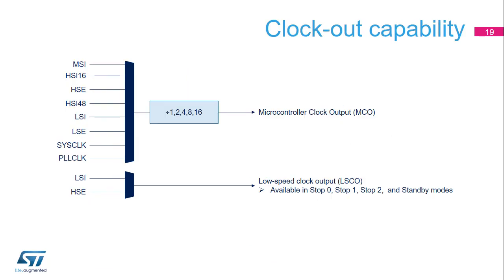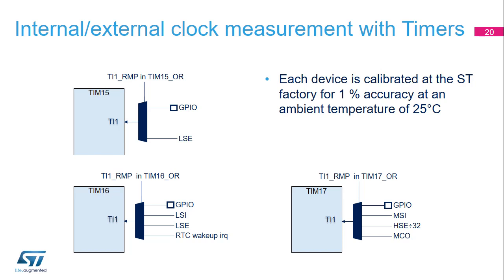The various clocks can be output on an I/O pad. The microcontroller clock output feature enables the external output of one of seven clocks: MSI, HSI16, HSI48, HSE, LSI, LSE, SYSCLK, and PLLCLK. The low-speed clock output feature enables the external output of the LSI or LSE clock. The low-speed clock output is available in stop 0, stop 1, stop 2, and standby modes. It is possible to indirectly measure the frequency of all onboard clock sources by means of the TIM15, TIM16, or TIM17 channel one-input capture. These measurements can be used to calibrate the LSI, MSI, and HSI16 frequencies.